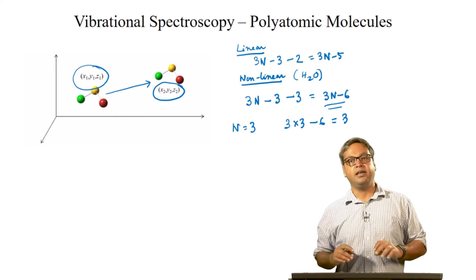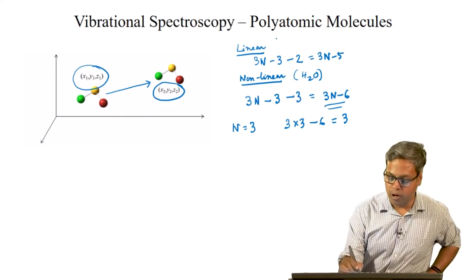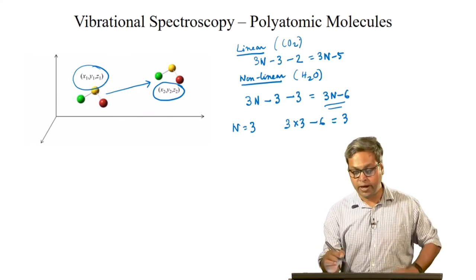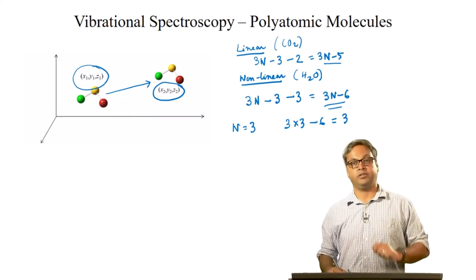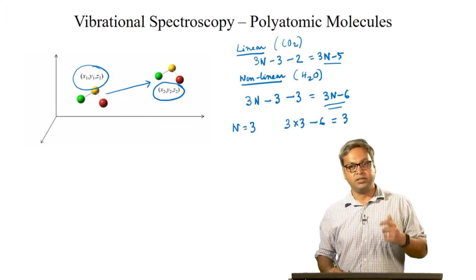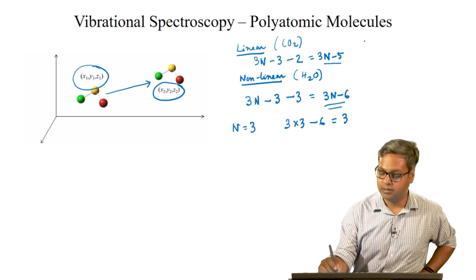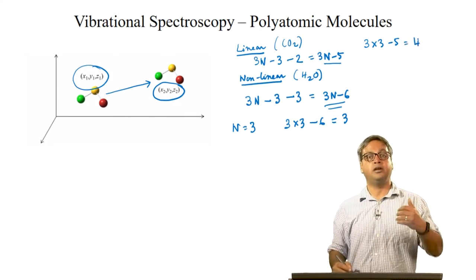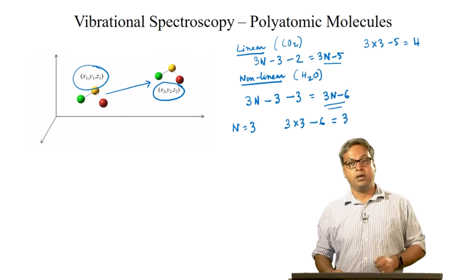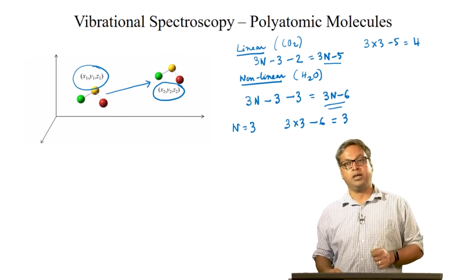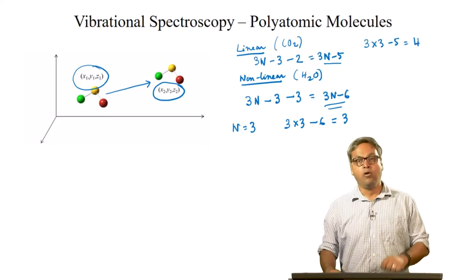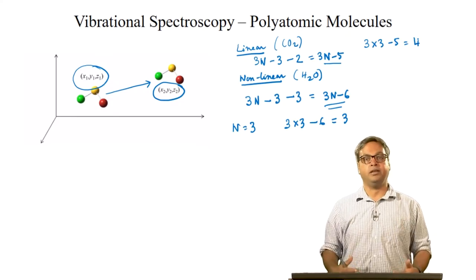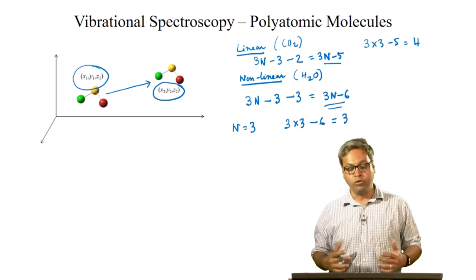Carbon dioxide is a linear molecule, so we expect 3N−5 vibrations. With N = 3, carbon dioxide has 3×3 − 5 = 4 vibrational degrees of freedom. However, the IR spectrum of carbon dioxide shows only 2 bands. We need to explain this, but before that we will formally define what is meant by normal modes of vibration.